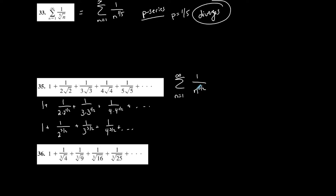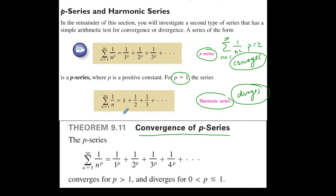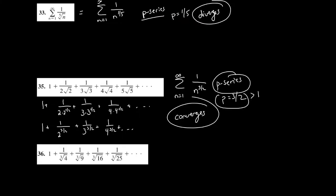If I plug in n equals 1, I get 1 over 1, which is 1. If I plug in n equals 2, I get 1 over 2 to the 3/2. It follows exactly what this says — it's just not represented in summation form. Now that it's in this form, we recognize this as a p-series where p is 3/2. Because p is greater than 1, the series converges. You want to recognize that it is a p-series first, and then use the p-series test.